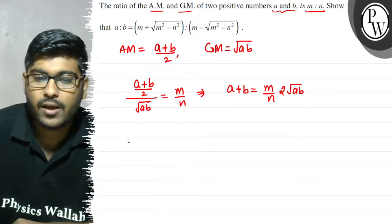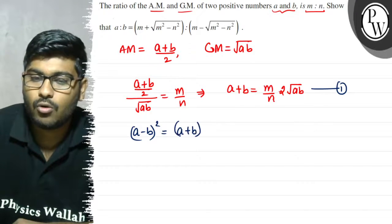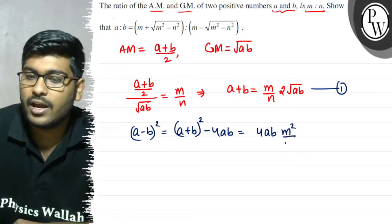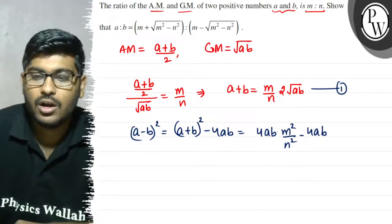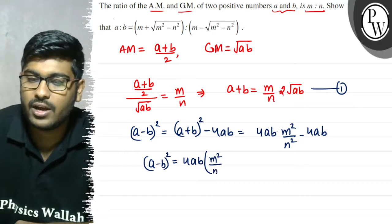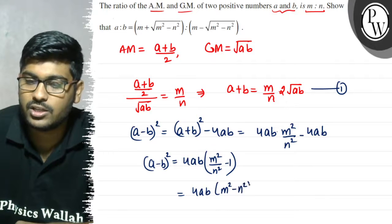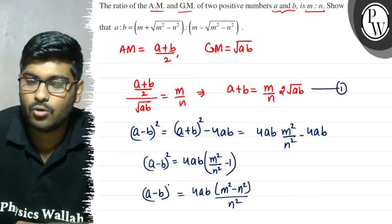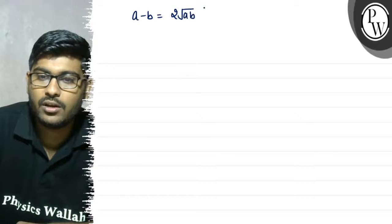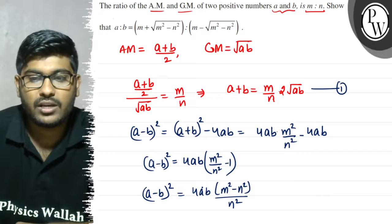Now we know one thing. We will compute (a minus b) whole square. (a + b) whole square minus 4ab equals 4m squared over n squared times ab minus 4ab. So now we have to write (a minus b) whole square.